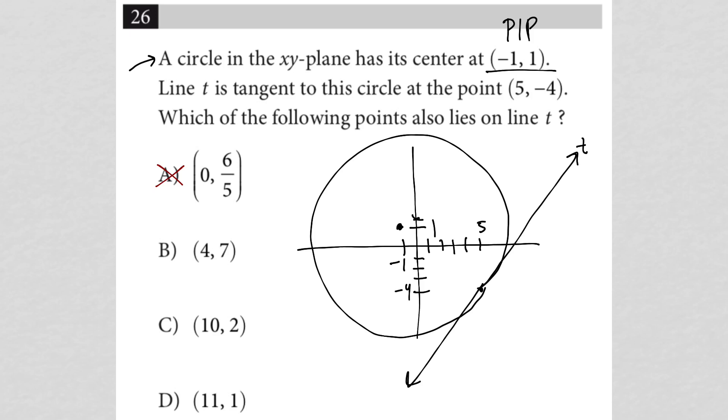How about choice B? Choice B is 4, 7. So on my graph that's 4, 1, 2, 3, 4, 5, 6, 7. So 4, 7 would be around there. That's also definitely nowhere close to being on line T. So that's out. So that's been helpful so far.